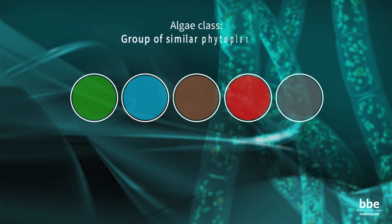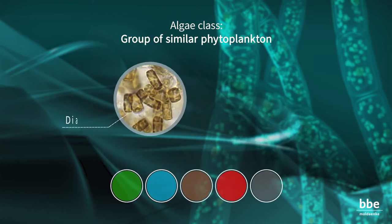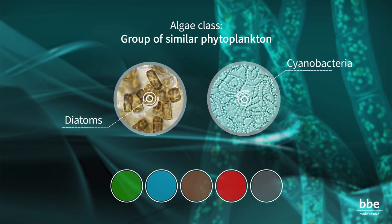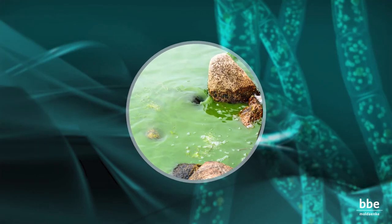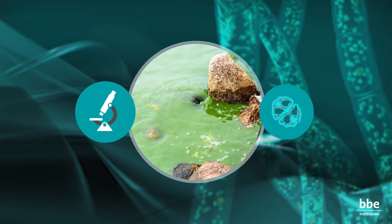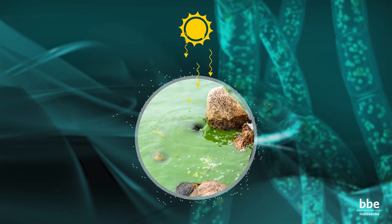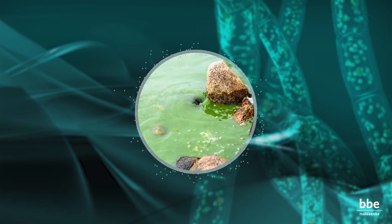Algae class means a group of similar phytoplankton, like diatoms or cyanobacteria. Like plants, phytoplankton are microscopic organisms living in the water that perform photosynthesis using pigments to turn sunlight into chemical energy.